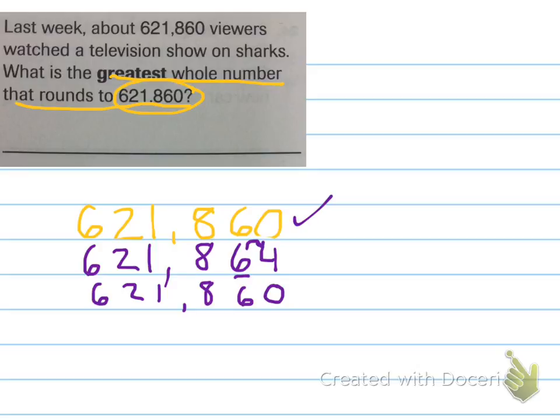Awesome. Now, let's not forget that they said the greatest whole number that would round to that. I think I'm right, because 64, that's as high as we could go, right? We couldn't do 65. That would round up to 870. 64 is the highest we could go. That would still round down to 621,860. So, my final answer would be 621,864.